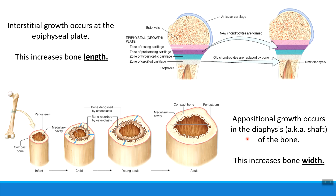Growing your bones wider uses a process called appositional growth. Appositional growth works by having bone-building cells on the outside of the diaphysis that put down new bone tissue. These bone builders, called osteoblasts, put more bone tissue on the outside of the bone.